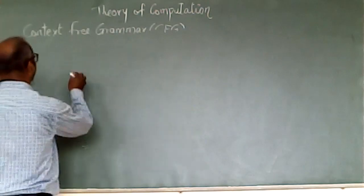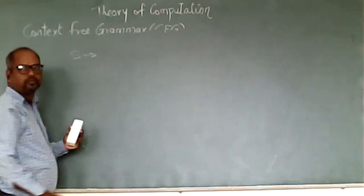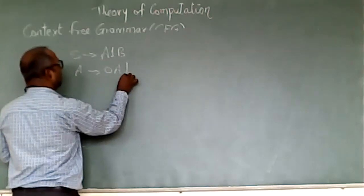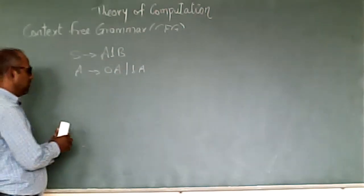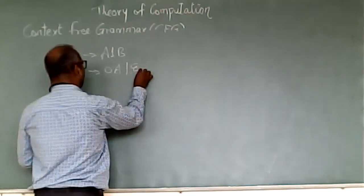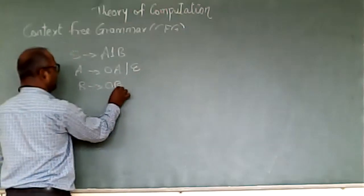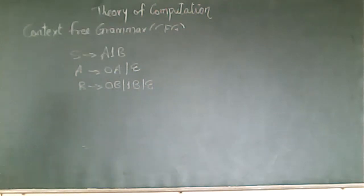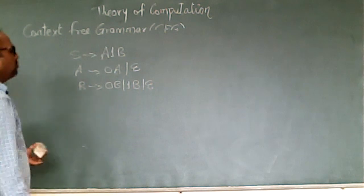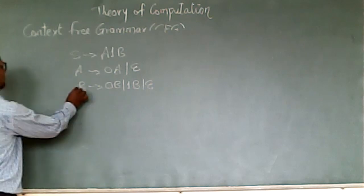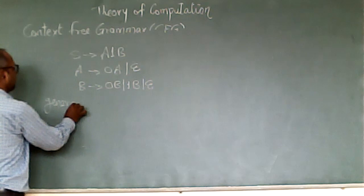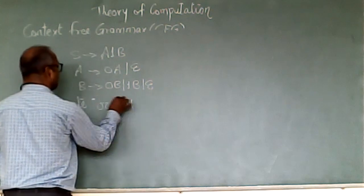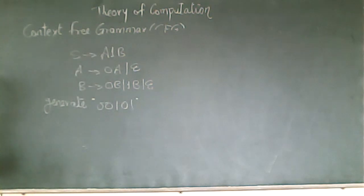Suppose the grammar is given as S tends to A1B, A tends to 0A or 1A, or epsilon, and B tends to 0B, 1B, or epsilon. These are the productions given. Now with the help of these productions we have to generate the string called as 00101. This string we have to generate with the help of the given grammar.